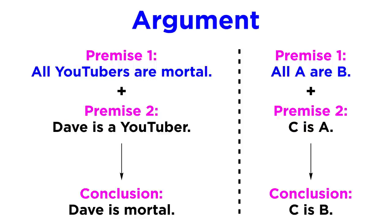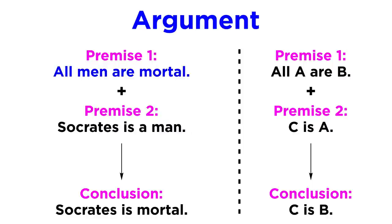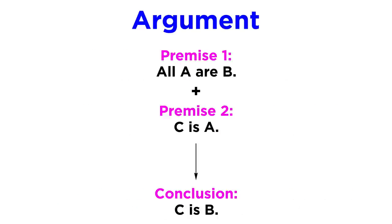What we establish with this argument is a relationship between certain categories, such as YouTubers and mortals, and how a member of one of those categories, Dave, is therefore a member of the other. Changing these words while maintaining the same format would still be valid, as with the classic: 'All men are mortal, Socrates is a man, Socrates is mortal.' We could even alter these operating words — 'all' to 'some,' 'is' to 'is not,' and so forth — and we would get different kinds of arguments.